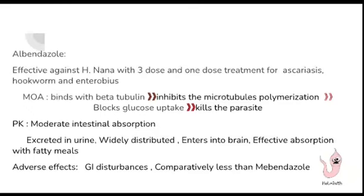To summarize the differences: mebendazole has minimal intestinal absorption while albendazole has moderate intestinal absorption. Mebendazole is excreted in the feces whereas albendazole is excreted in the urine. GI disturbances are comparatively less with albendazole, and albendazole absorption is enhanced when the patient takes a fatty meal.